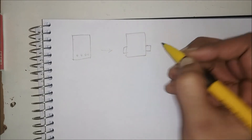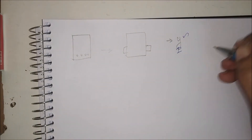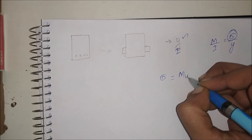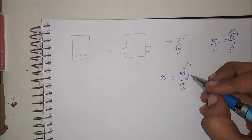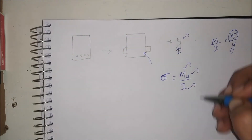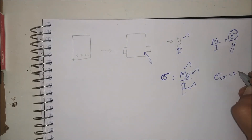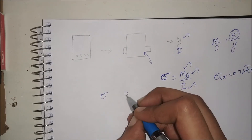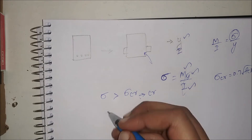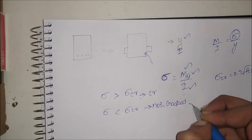From the transformed section I can find y and I — it's straightforward using strength of materials. Then applying M/I = σ/y, I get σ = My/I, which is the stress produced in the concrete for the given moment. I compare this σ with σ_critical = 0.7√fck: if σ is greater than σ_critical, the section has cracked; if less, it has not cracked.